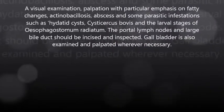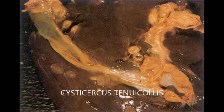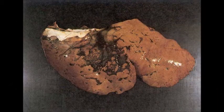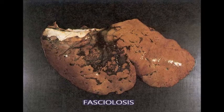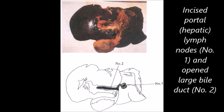Examination of the liver: A visual examination of the liver followed by palpation with particular emphasis on fatty changes, actinobacillosis, abscesses, and parasitic infestations such as hydatid cysts, Cysticercus bovis, and larval stages of Oesophagostomum radiatum. The portal lymph nodes and large bile ducts should be incised and inspected. The gall bladder is also examined and palpated wherever necessary.